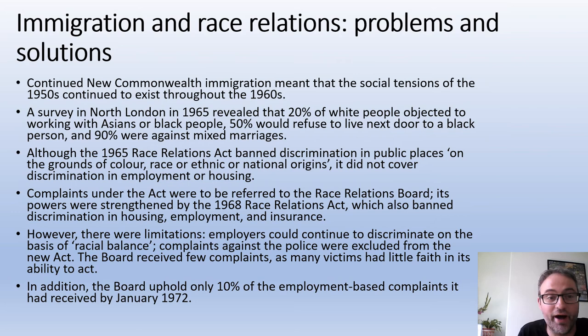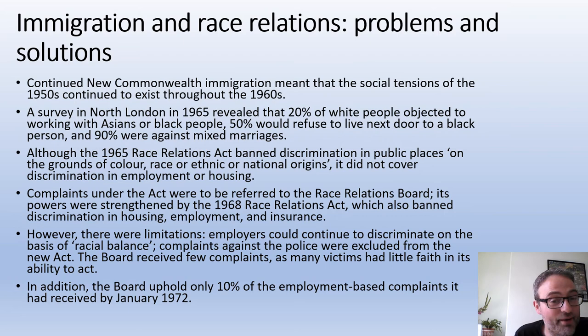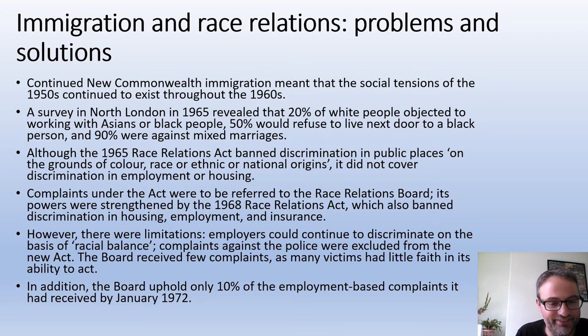The survey figures are quite shocking: 20% of white people objected to working with people from an ethnic minority; half of white people would refuse to live next door to a black person; and 90% were against mixed marriages. These are quite astonishing figures looking at them from a 21st century perspective. Do not underestimate the depths of racial tension in the 1960s.